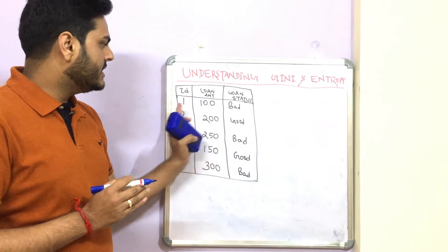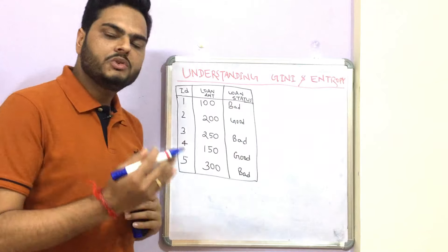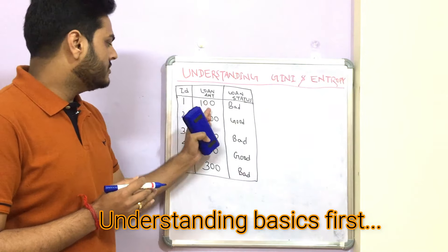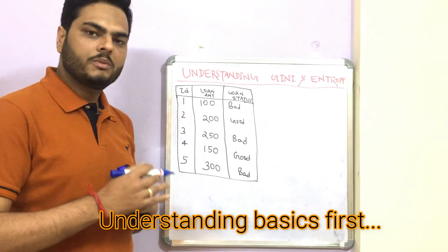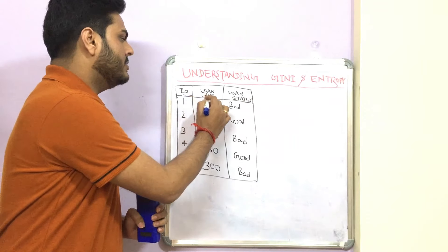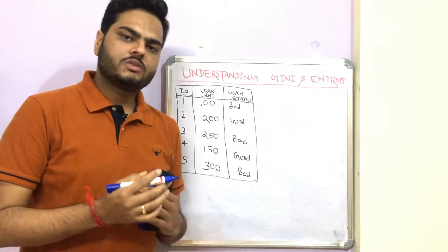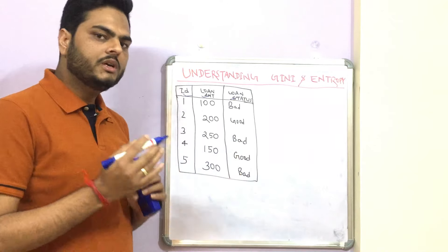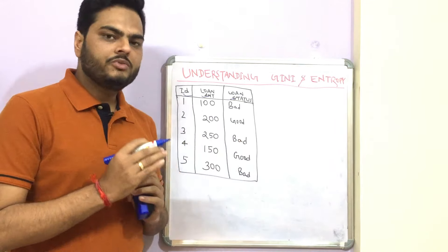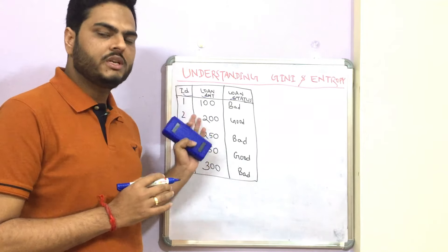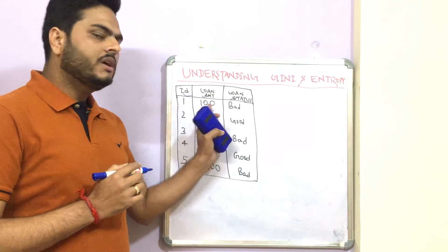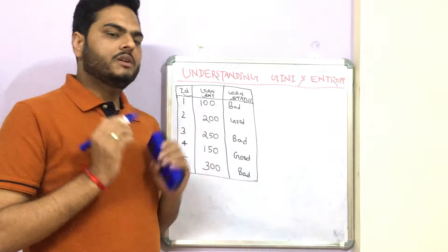If you see this data, this is the same data I have been using in my previous examples as well. You can think of this as financial institution data or bank loan data. We have customer ID, loan amount, and loan status. This is historical data of a bank. Now, what happens when we take this data and run a decision tree algorithm on top of it?